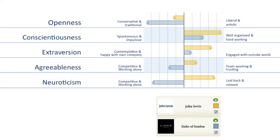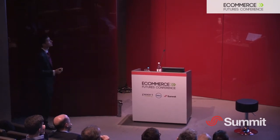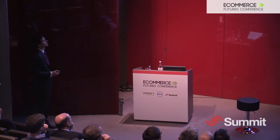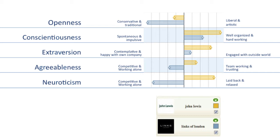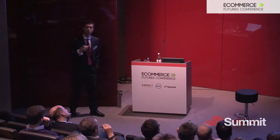Here are a few examples of aggregate profiles. Looking at Links of London and John Lewis, both groups of customers are rather conservative — with Links of London being especially so. Those consumers are traditional, well-organized, and hard-working. John Lewis customers are also organized and hard-working. The most drastic difference between the two brands is that John Lewis customers are laid-back and relaxed, whereas Links of London consumers are very easily stressed and emotional.